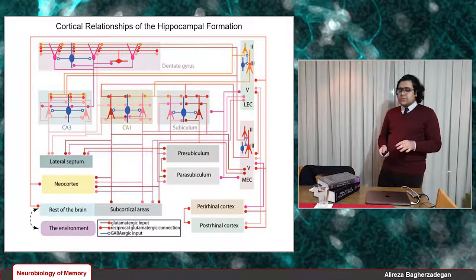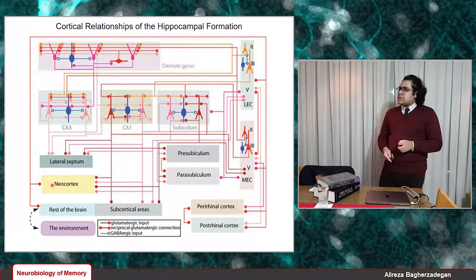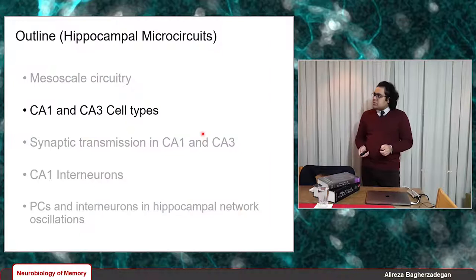We also have glutamatergic cells at layer 3 of the entorhinal cortex that directly contact the pyramidal cells in CA1 — that's why this is called the direct perforant pathway. Pyramidal cells of CA1 then provide the major output of the hippocampus, with most output going back to the entorhinal cortex, some going to subcortical areas, and some going to the neocortex.